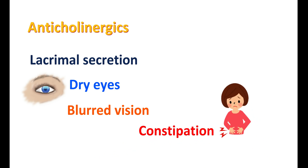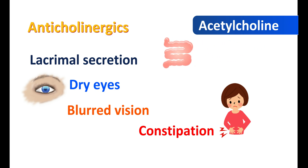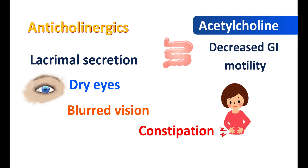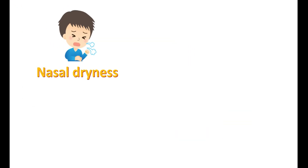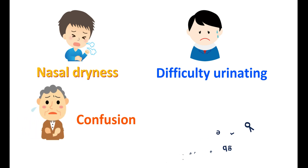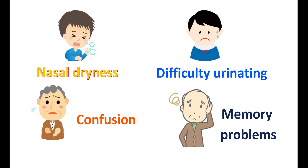Constipation is another important and commonly observed side effect. Acetylcholine is responsible for contraction of gastrointestinal smooth muscle, and anticholinergics block this action, resulting in decreased GI motility and leading to constipation. Intake of fiber-rich foods can relieve constipation; it is better to add avocado, strawberries, apples, pears, oats, lentils, bananas, and dry fruits to the diet. Nasal dryness, difficulty urinating, confusion, and memory problems are also often observed.